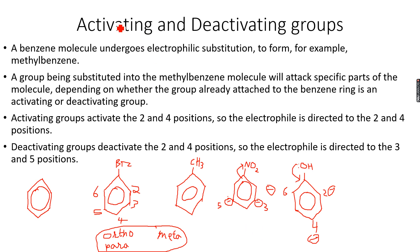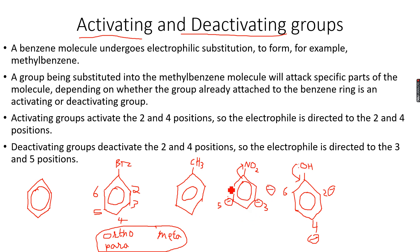So OH is an activating group and NO₂ is a deactivating group. An activating group activates the two, four, and six positions. A deactivating group deactivates the two, four, and six positions, and therefore, relative to those positions, the three and five positions are left activated. So my electrophile can only attach to those areas.